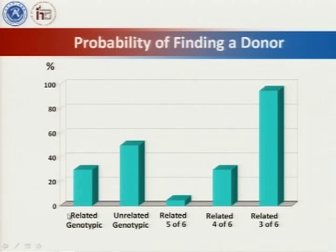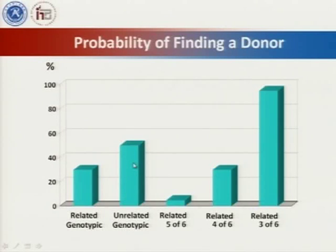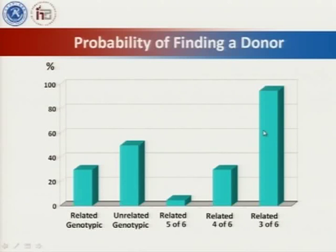Although we can use unrelated donor programs or cord blood, only some patients can find an unrelated donor. But almost all patients have at least one HLA-mismatched or haploidentical family donor.